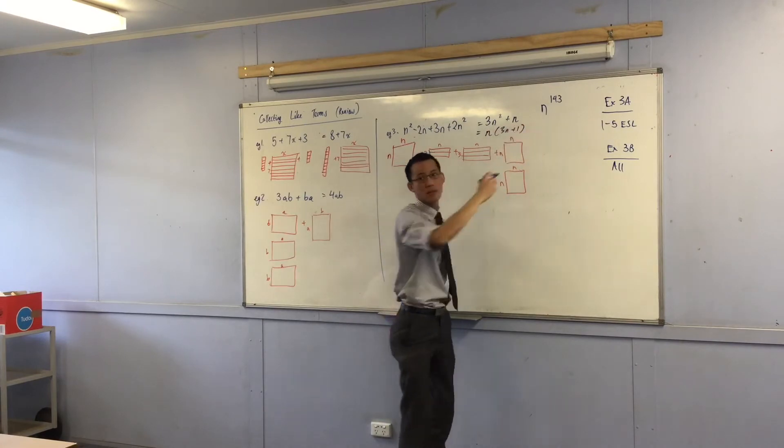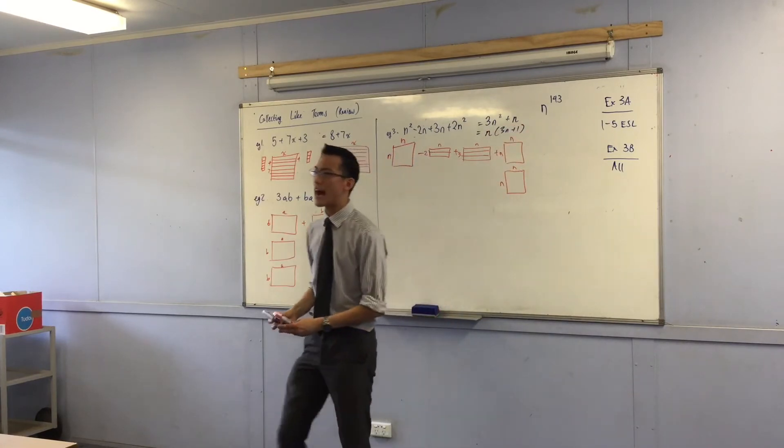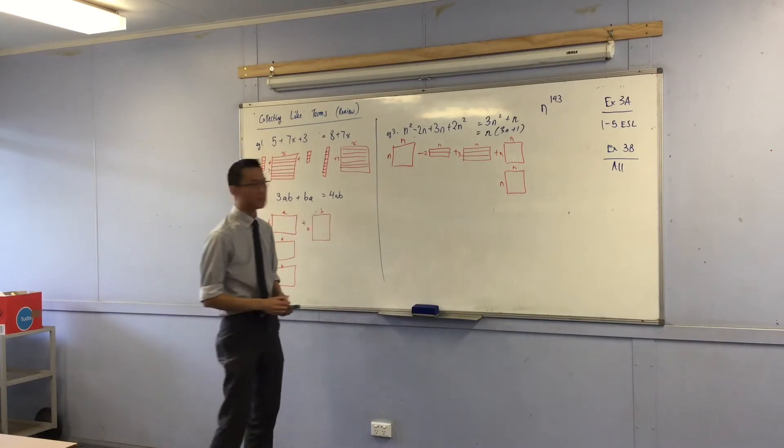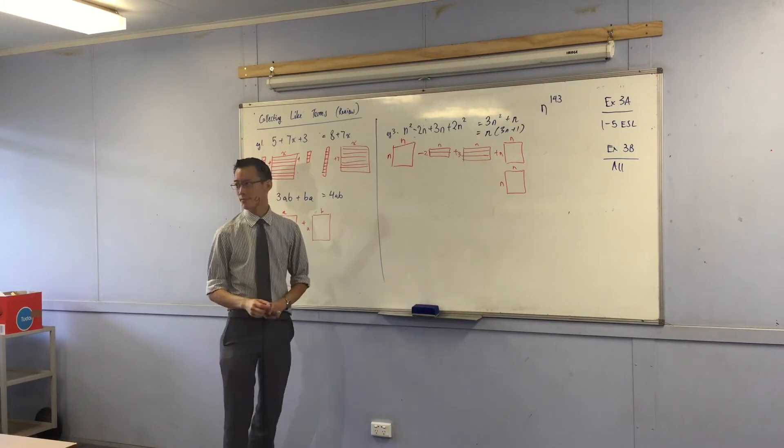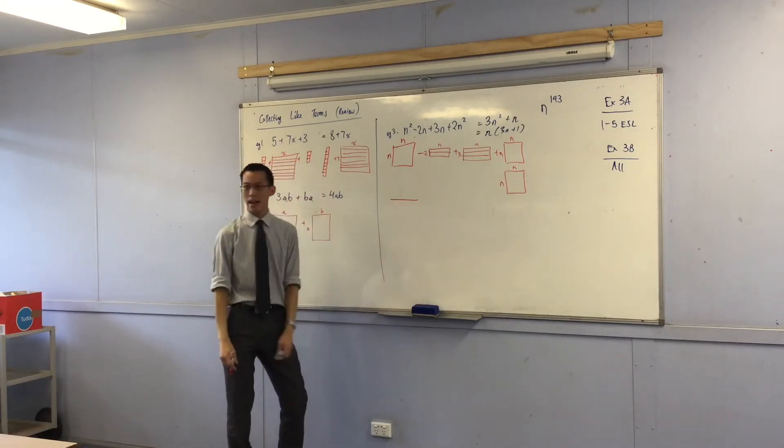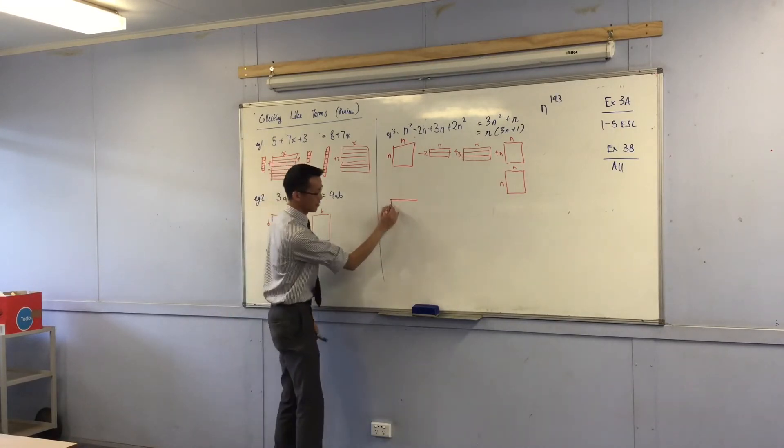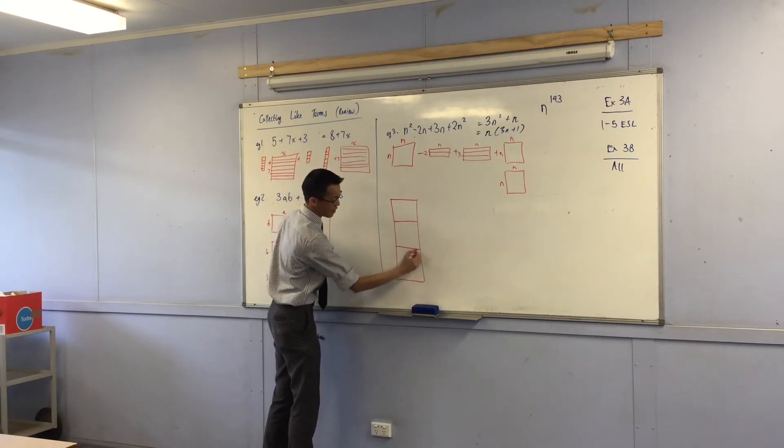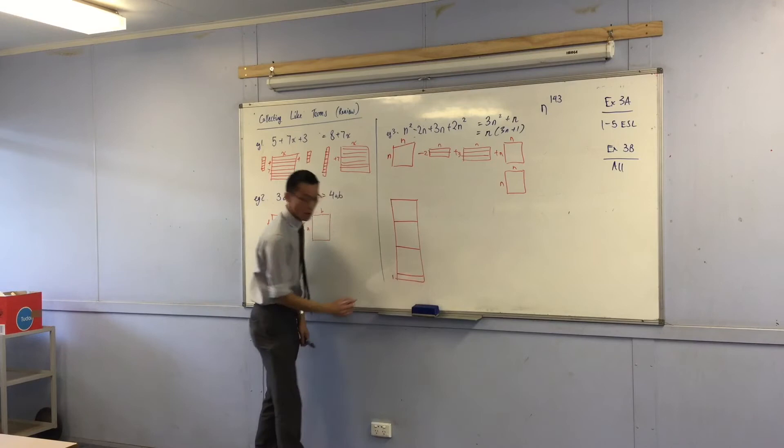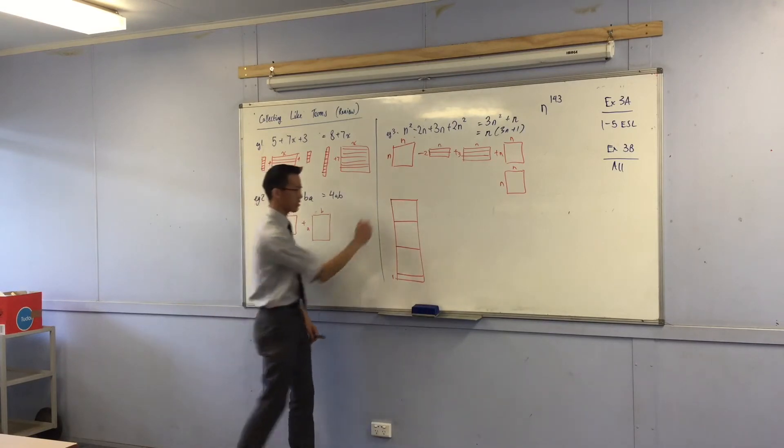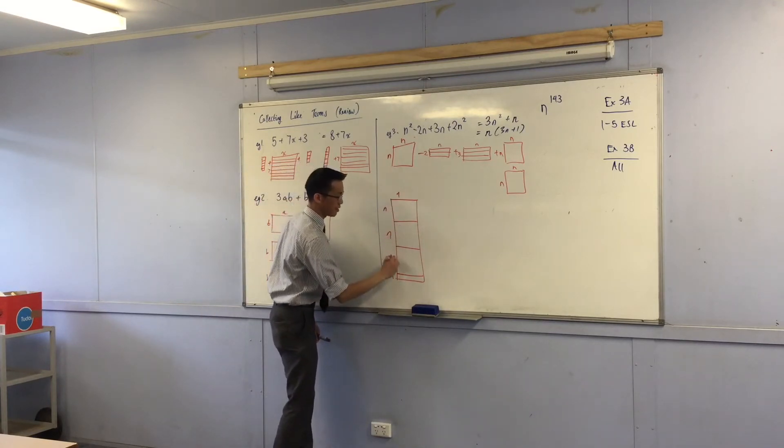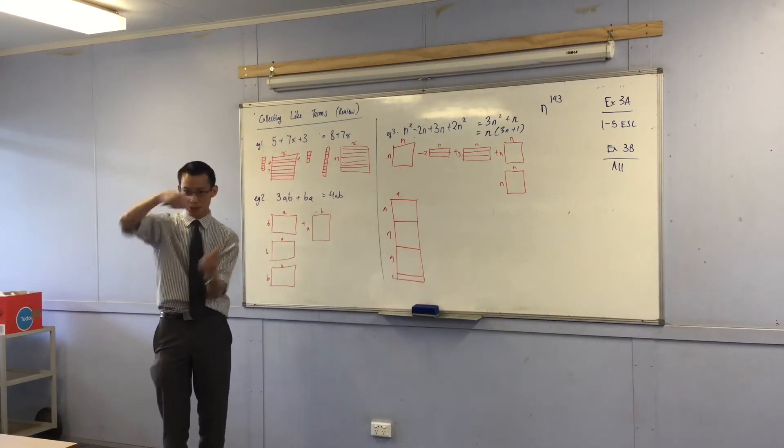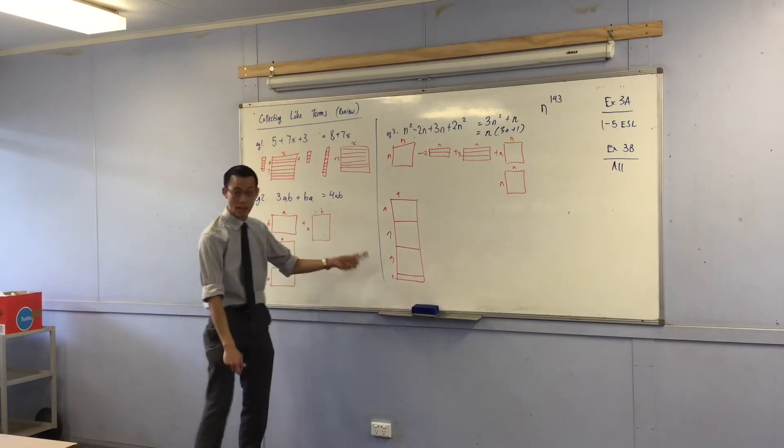Now just pause, what would that look like? What does that look like? It's n wide and how high is it? 3n and plus 1. Do you see it?